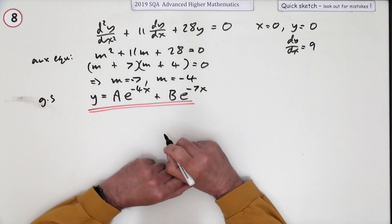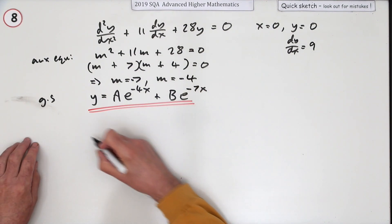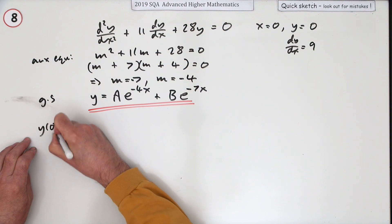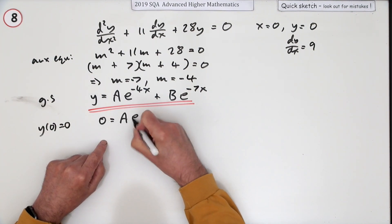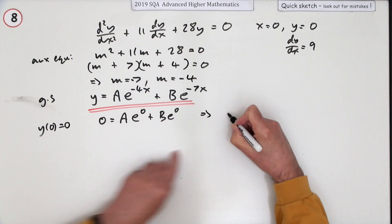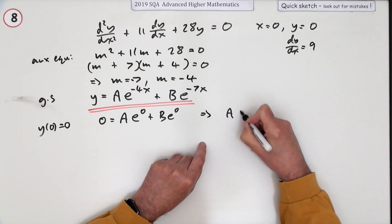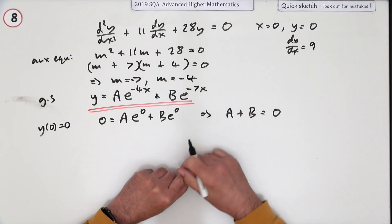Now you need to find A and B. Get that from initial conditions. So one initial condition is this y(0) = 0. So 0 = Ae^0 + Be^0, so there you go, they're both ones. So A + B = 0, so they're numerically the same with opposite signs.